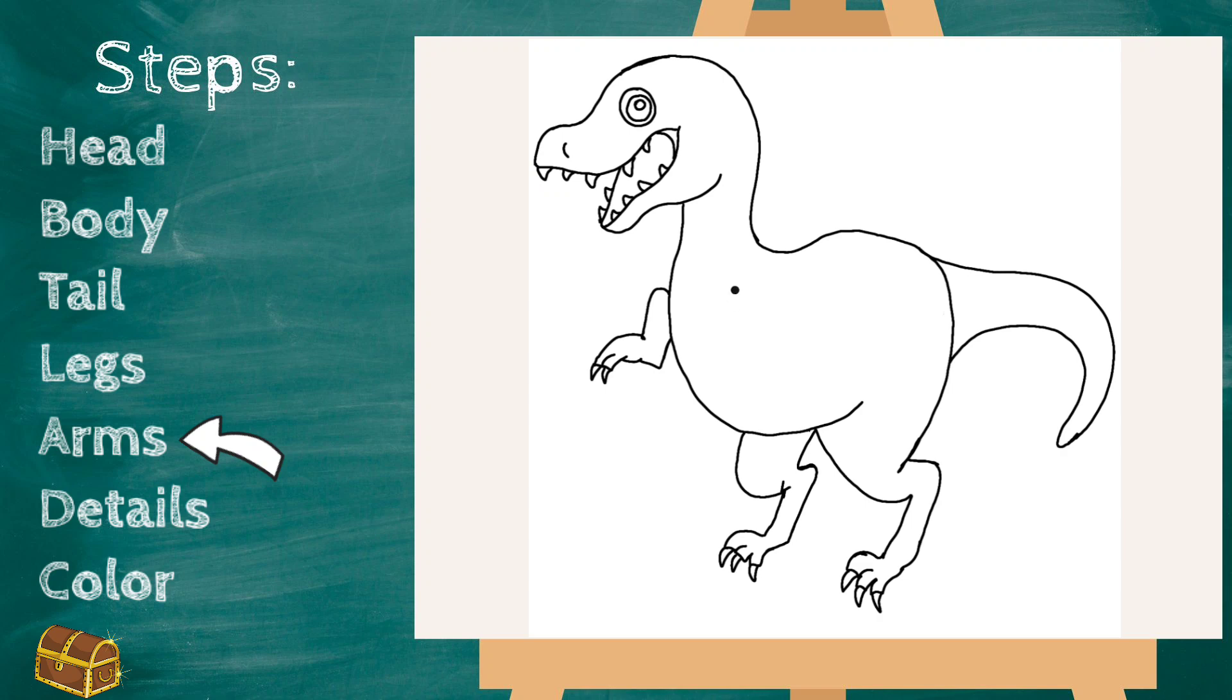And now let's draw the other arm. So we're going to start right in the middle of his shoulder area. And almost looks like the crooked letter J. And now let's draw his hands. And add two little claws. That looks really good.